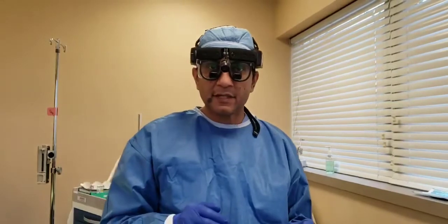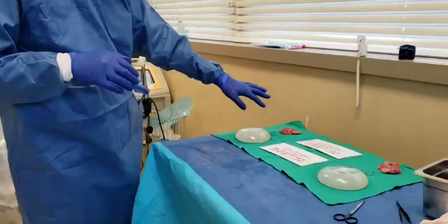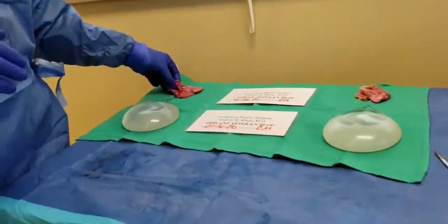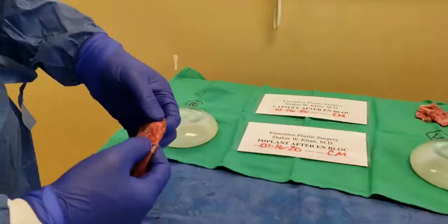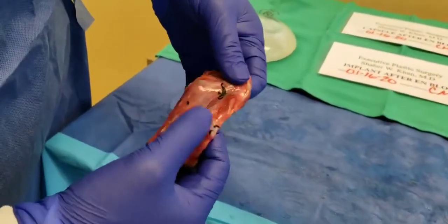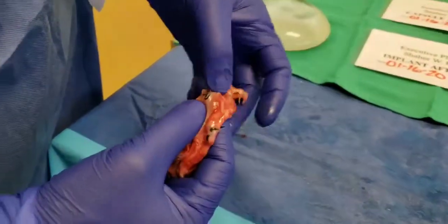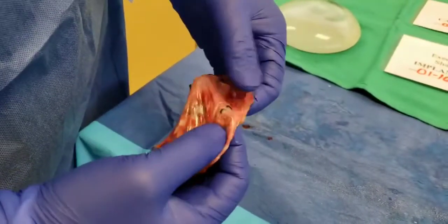She came to me with the classic signs of breast implant illness. I resected the capsule off. What I find interesting, as you will see, is there's a lot of suture that the previous surgeon left behind, and this is something I find abnormal.